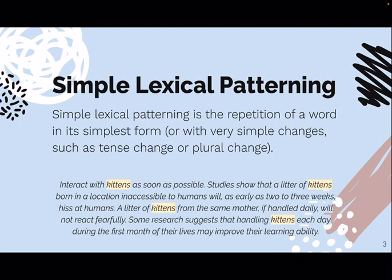Simple lexical patterning is the repetition of a word in its simplest form, or with very simple changes like tense or plural changes — basically inflectional morphemes. If a root word is repeated throughout a text with those changes, it counts as simple lexical patterning. Looking at this paragraph about kitten behaviour and training, 'kitten' and 'kittens' repeated throughout is a clear example. However, adding a derivational morpheme like '-ing' to form a verb would not qualify as simple.